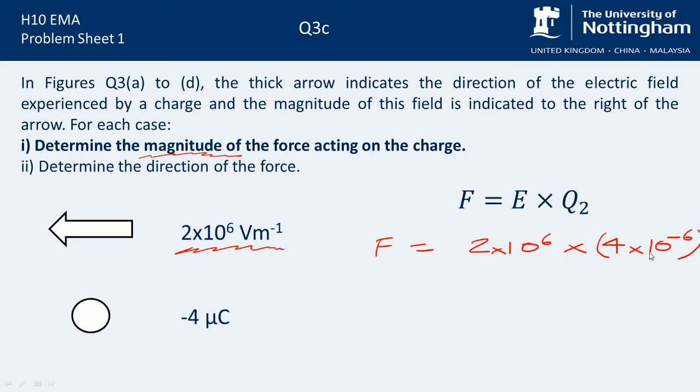You can put brackets in here for your working. You really should because it makes it clearer about what's going on. So F is then equal to 8 newtons. The magnitude of the force acting on the charge is 8 newtons.